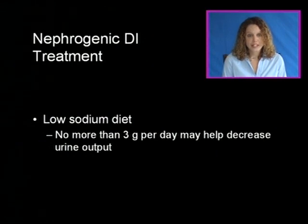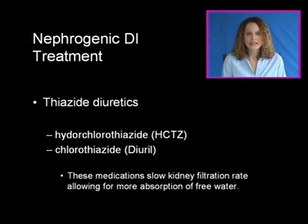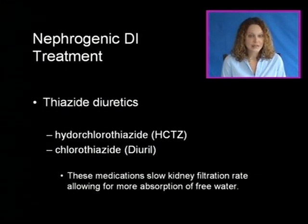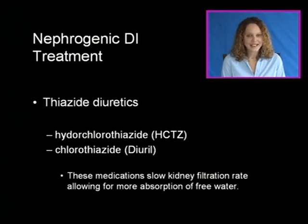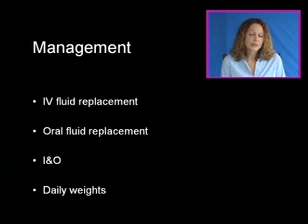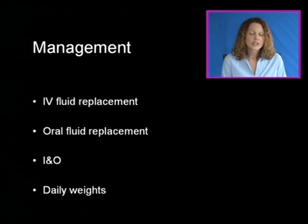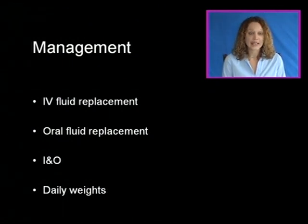Treatment for nephrogenic DI includes a low-sodium diet — usually no more than 3 grams per day — which may help decrease urine output. Thiazide diuretics such as hydrochlorothiazide actually slow the kidney filtration rate, allowing for more absorption of free water. Management also includes IV and oral fluid replacement, strict intake and output monitoring, and daily weights to measure weight loss.